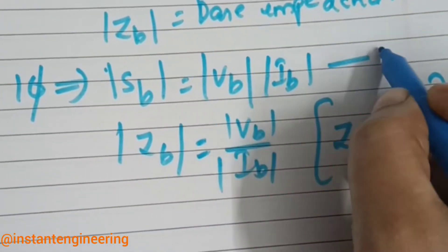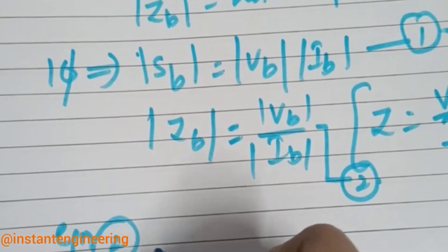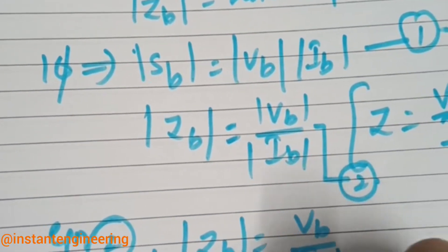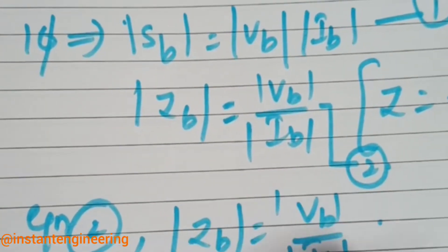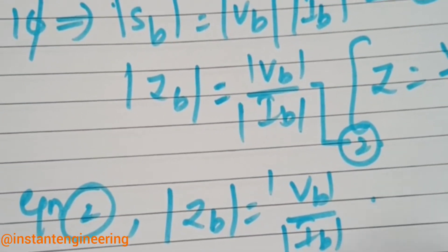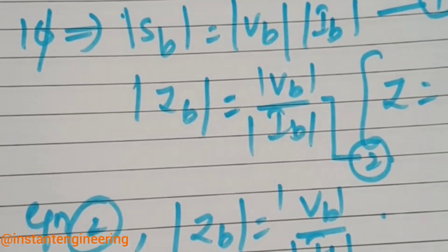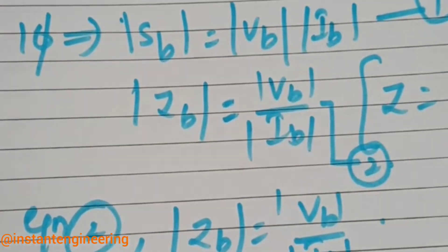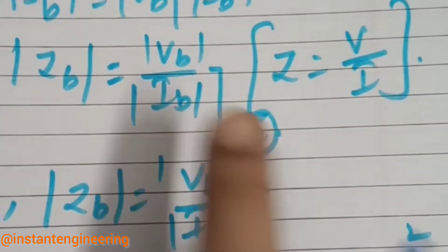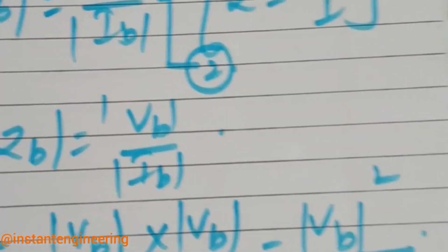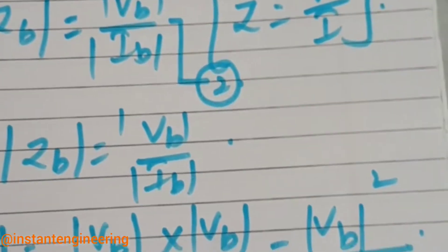From Equation 2, ZB = VB/IB. To simplify, we multiply and divide by VB, giving ZB = VB²/(VB × IB). Since VB × IB = SB from Equation 1, we get ZB = VB²/SB. This is an important result to remember.